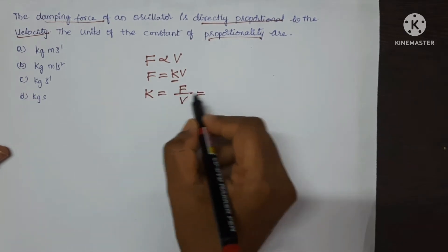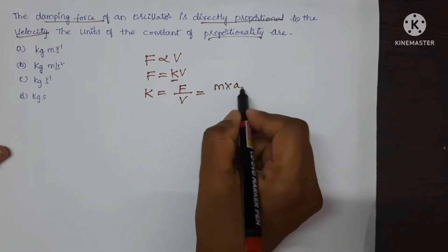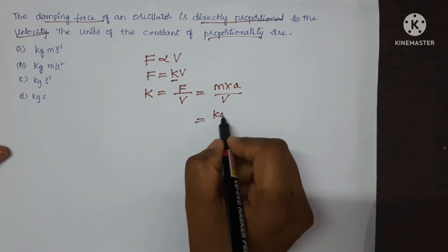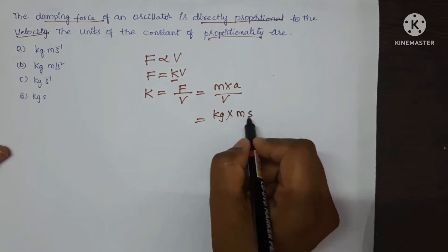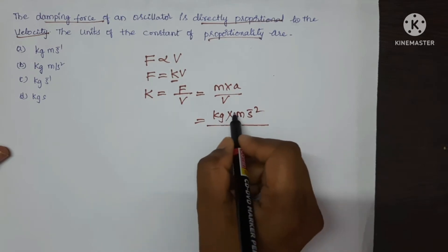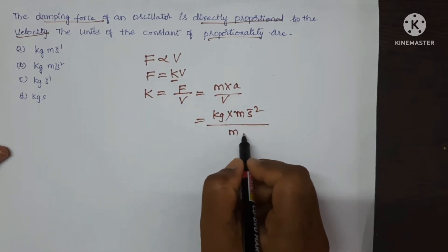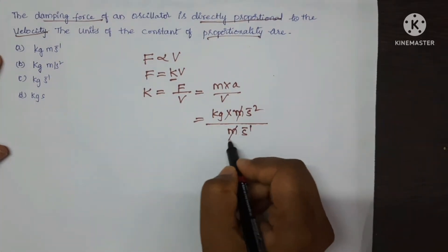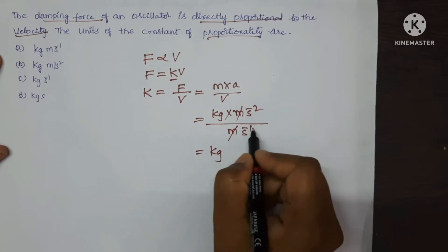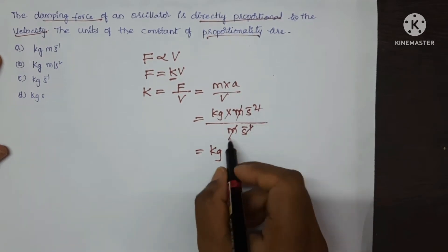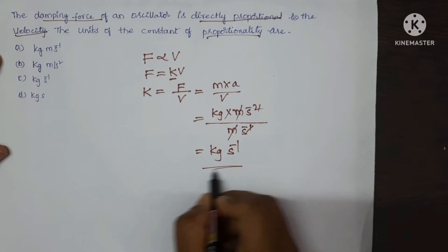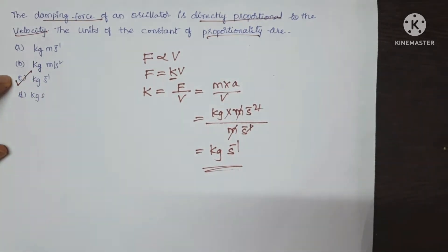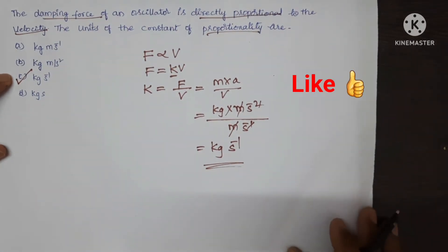Write the formula for force: mass into acceleration upon V. Now write the SI unit for mass — kilogram — acceleration — meter per second square — upon velocity — meter per second. See here, meter and meter will get cancelled. So KG and 1 second, 1 second will get cancelled, leaving S to the power of minus 1. So the unit is kg·s⁻¹. C is the correct option. Let's see the next question.